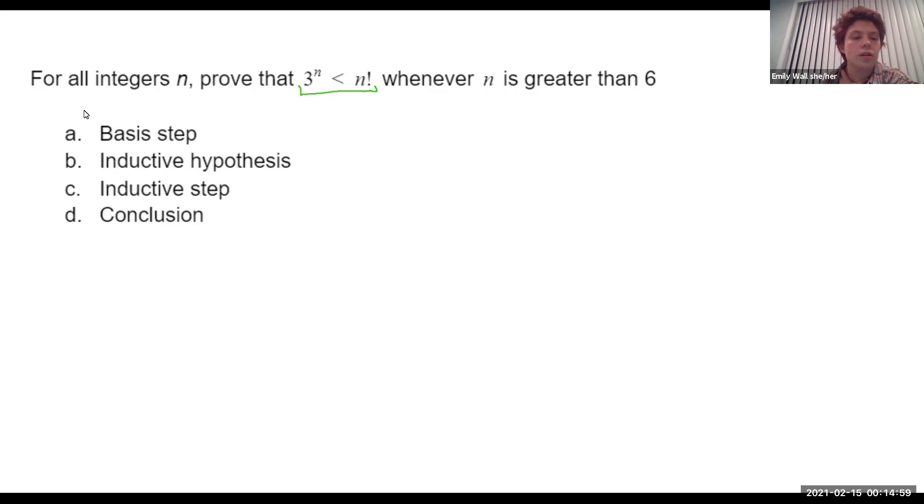First thing I'm going to do is help us out a lot by defining this predicate P(n), which is 3^n, which is true when 3^n is less than n factorial. We'll use this notation a lot through this problem, so it'll be very helpful, like in part a, which is the basis step.